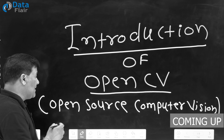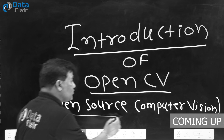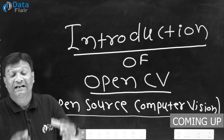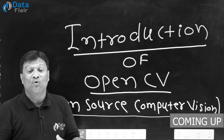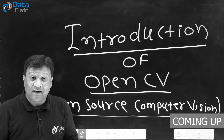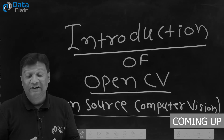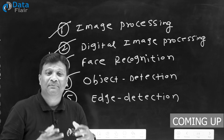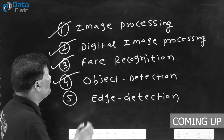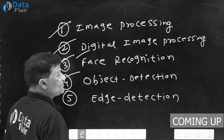OpenCV basically stands for Open Source Computer Vision Library. This is one of the libraries supported by Python to work with digital images as well as videos. OpenCV is basically used for applications where we talk about digital image processing.